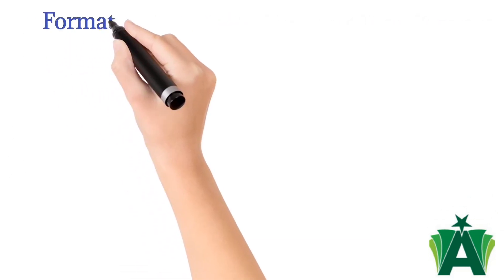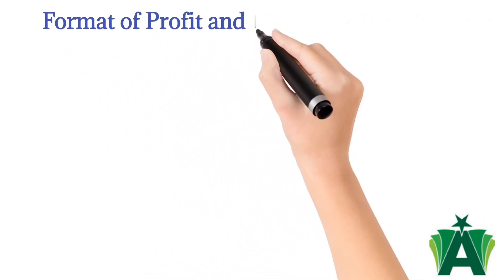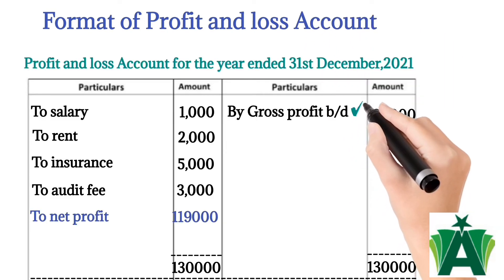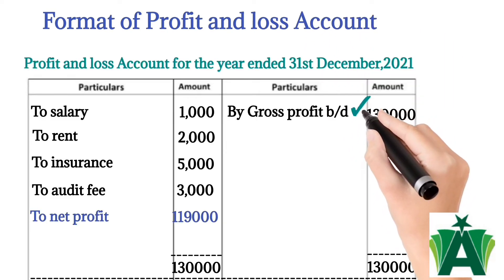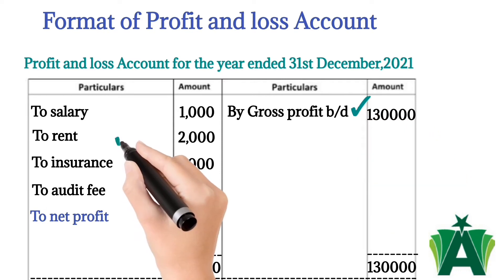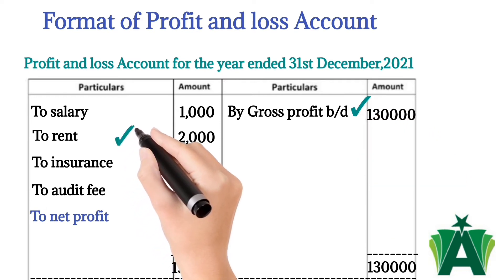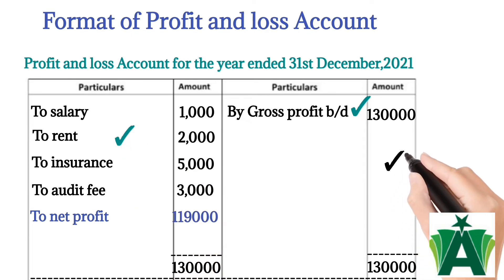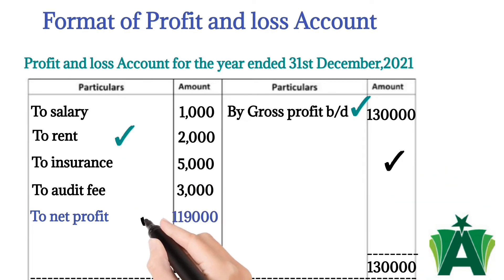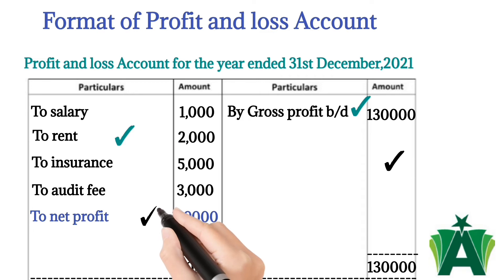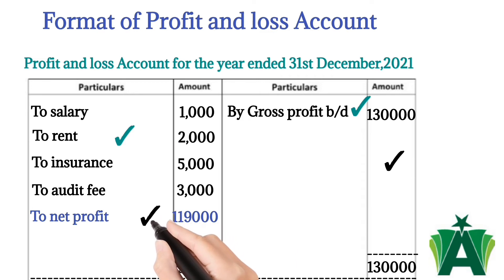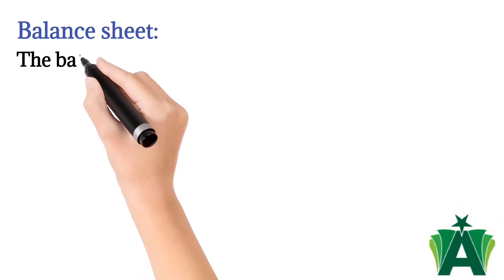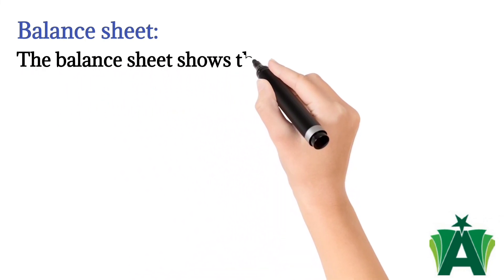Format of profit and loss account: gross profit is brought down in the credit side of the profit and loss account. All indirect expenses are recorded in the debit side, and indirect revenues are recorded in the credit side. A credit balance of the profit and loss account is called net profit, and a debit balance is called net loss.